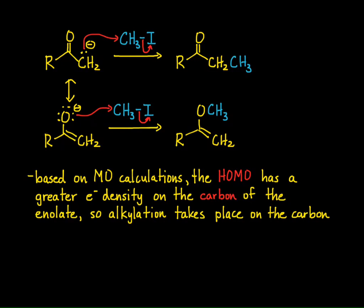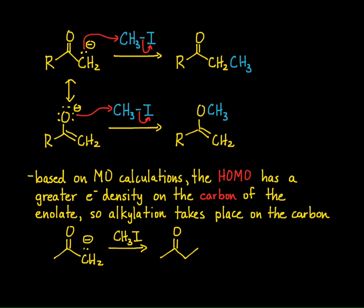In terms of predicting products, we can simply say that the enolate has the negative charge on the carbon, it's going to react with the alkyl halide, and we get alkylation at that particular carbon. So that's very important to understand.